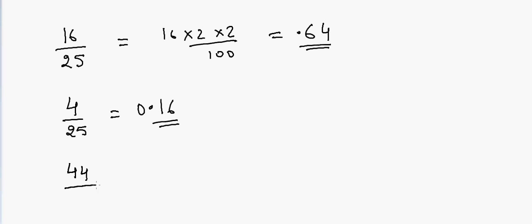Another example: 44 divided by 25. What we have to do is double 44 — 44 times 2 is 88, and 88 times 2 is 176 — so the answer is 1.76.